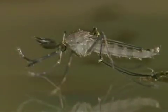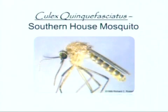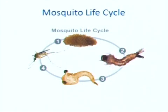Mosquitoes do not develop in grass or shrubbery, although flying adults frequently rest in these areas during daylight hours. All mosquitoes must have water to complete their life cycle. The life cycle consists of four stages: egg, larvae, pupae, and adult.